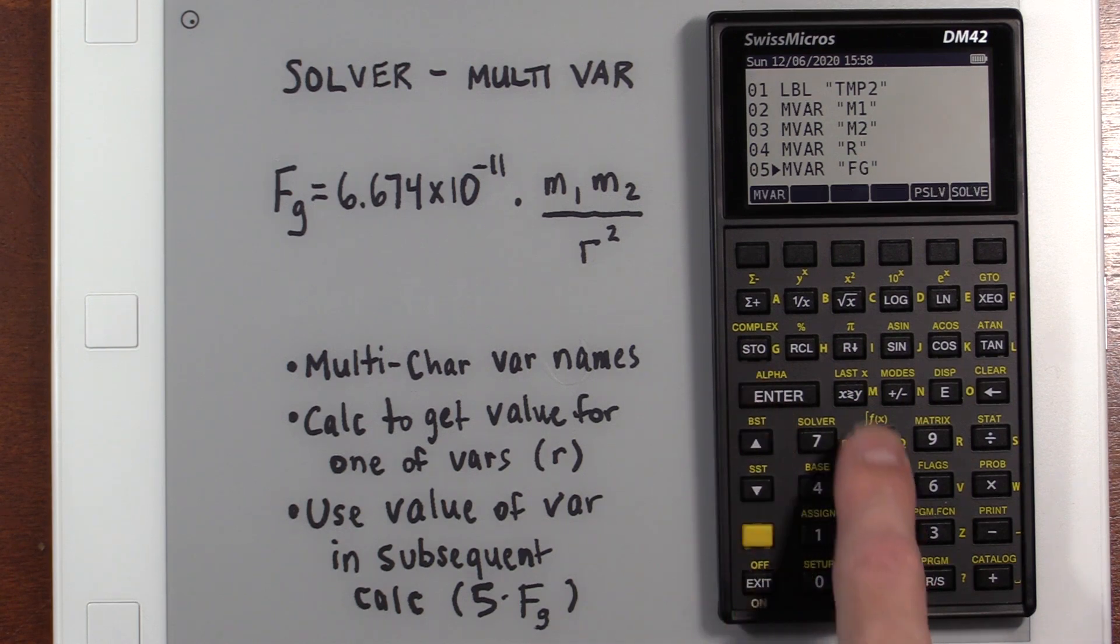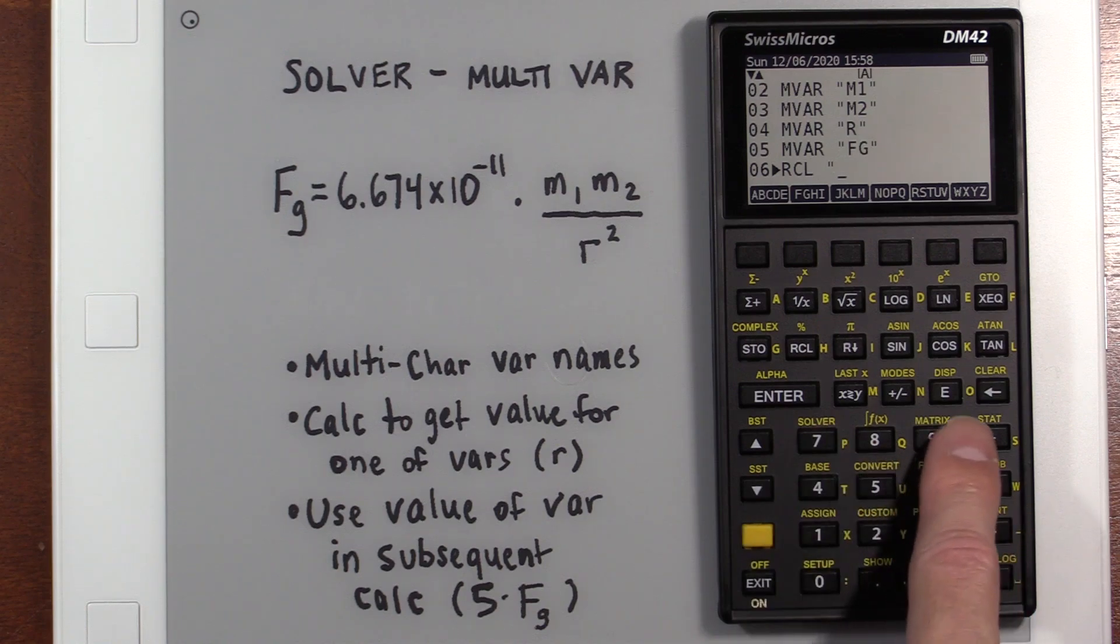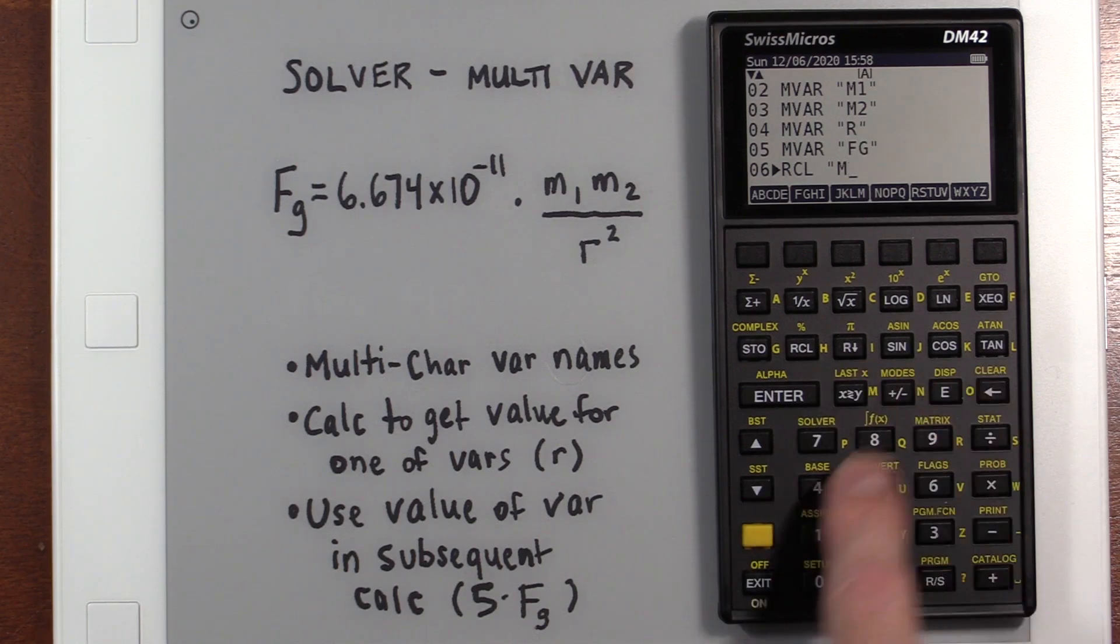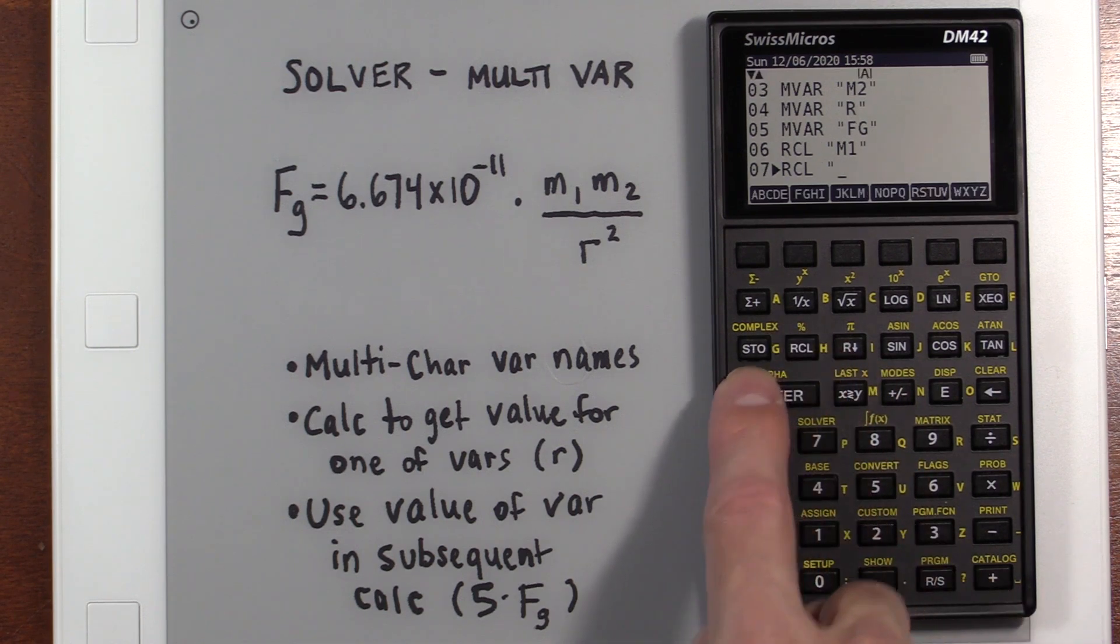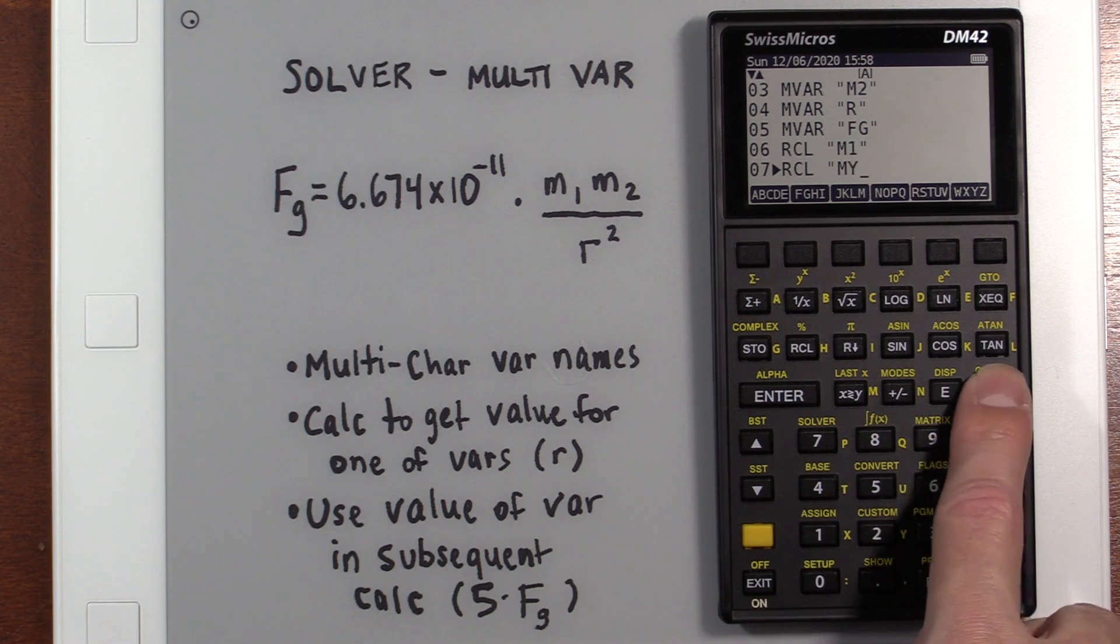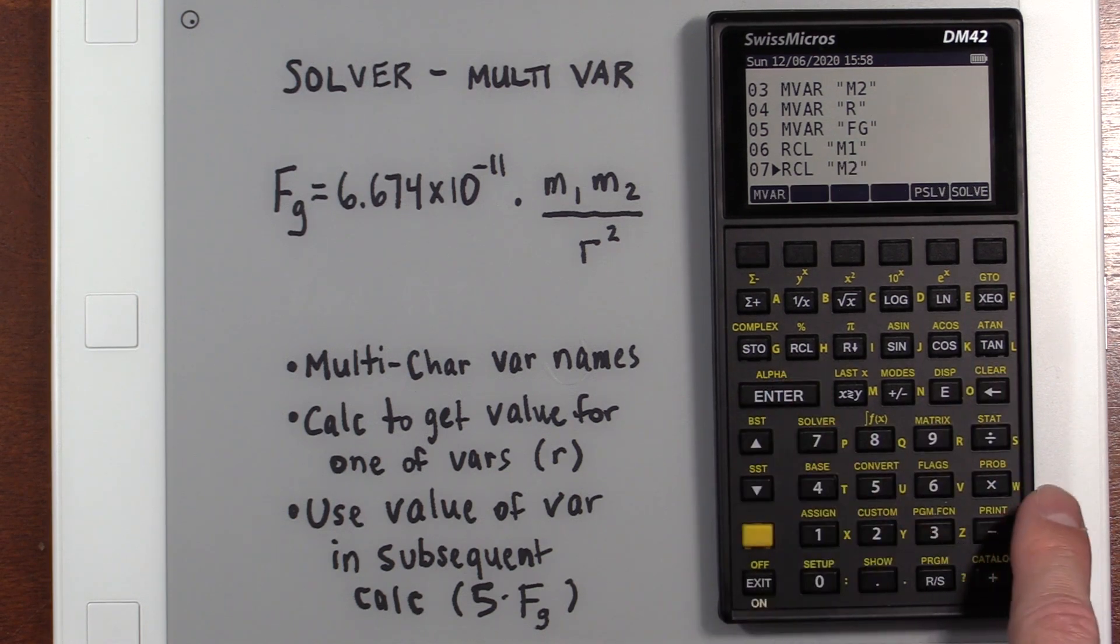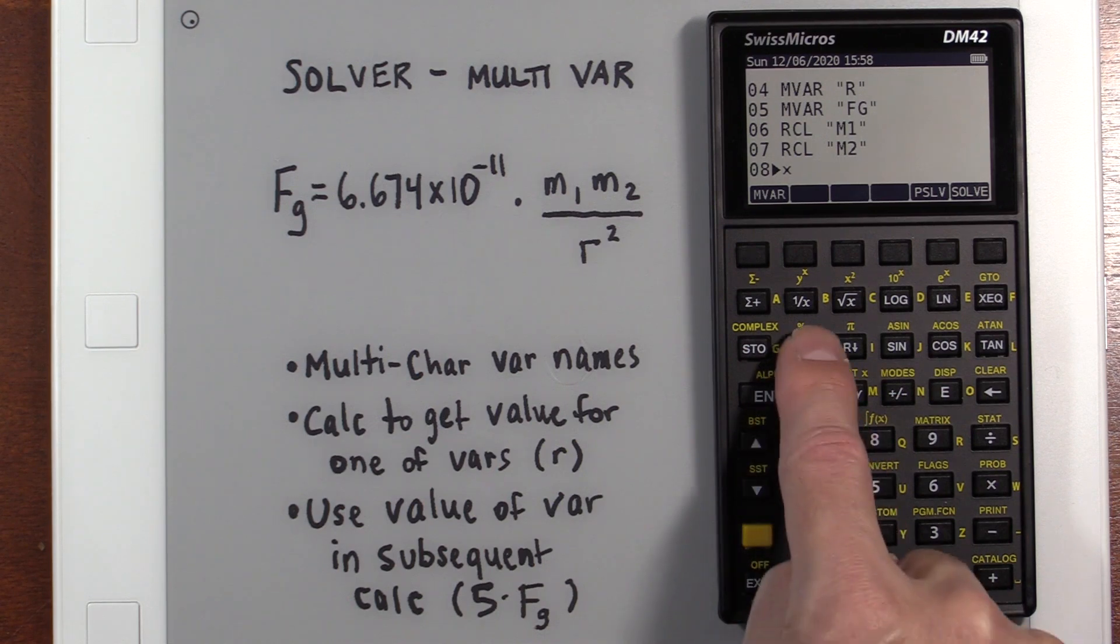And then we've got to do M2, which is, and we're going to do R. And finally, we have our FG. If you do see it there, you can just click it. But again, I'm showing how it would be if I hadn't have done that. All right. So again, all those entered. Then we've got to recall our M1. Oops.